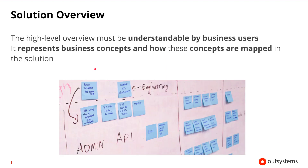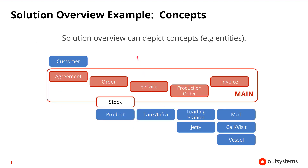We will start by building a high-level solution overview. The high-level overview should be understandable by the business users. It represents business concepts and how they'll map to the overall solution. In the following example, the solution overview depicts concepts from different types of entities, and this allows us to verify if our understanding of the concepts is correct before we begin designing more of the system.